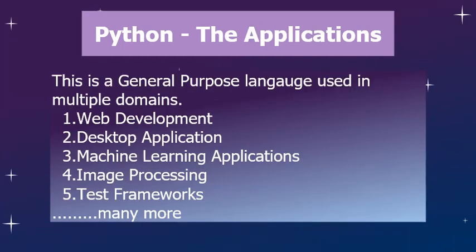The next point is that Python is a general-purpose language. Its applications are not limited to a particular domain — it can be used in multiple domains like web development, desktop application development, machine learning, image processing, creating text frameworks, and many more. That is why Python is called a general-purpose language.